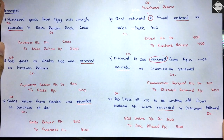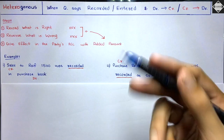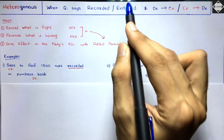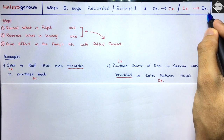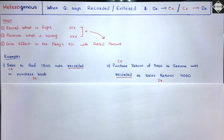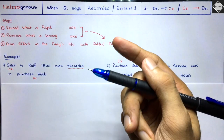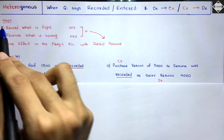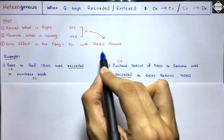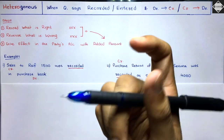Now let's move to heterogeneous errors. How to identify: the question says 'recorded', 'entered', or 'passed', and debit has gone into credit or credit has gone into debit — opposite boundaries. The steps to rectify heterogeneous errors are the same as homogeneous, with one extra third step: give the effect in the party's account with the added amount.